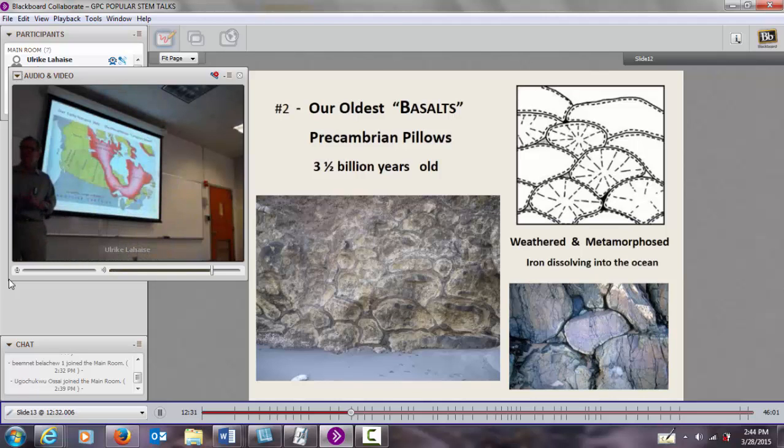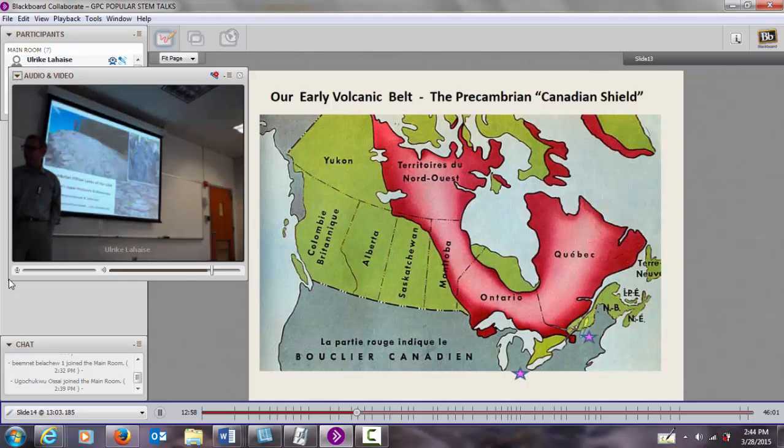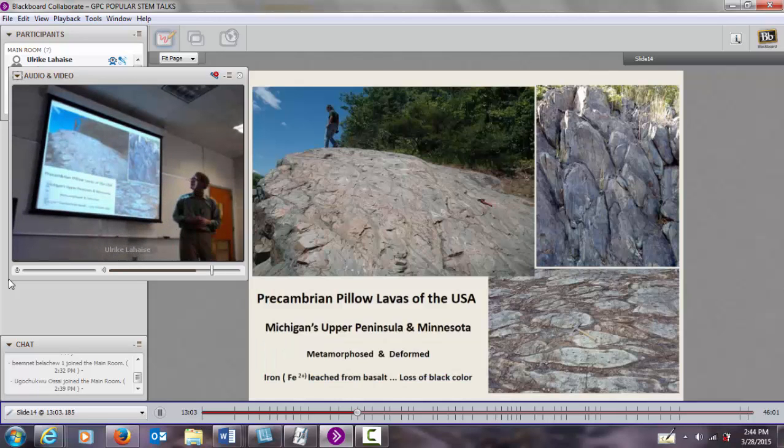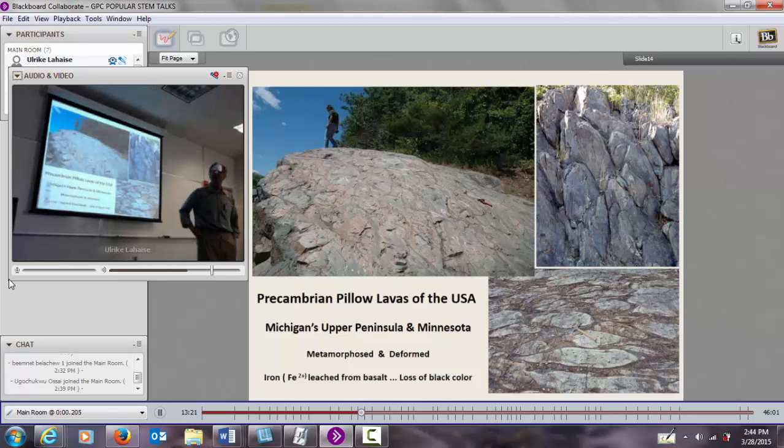These very old Precambrian pillows from the oceanic crust, we've leached the iron out and it's beginning to concentrate in the oceans. If I go to the oceans today, there's no iron in them. So we have to figure out why the iron got concentrated and why it came out. Iron dissolving into the ocean because all the black pillows are turning white. I studied this oldest set of rocks in the upper peninsula of Michigan, over in Wisconsin.